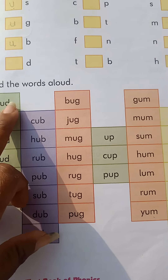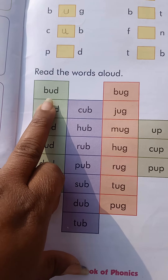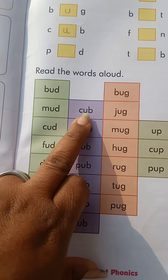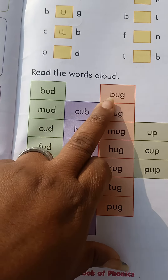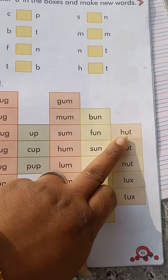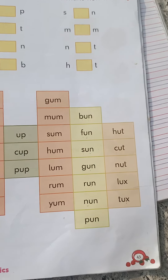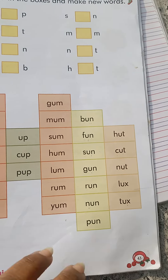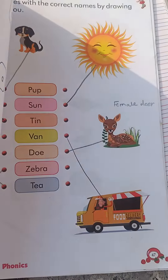Now read the words aloud: B-US, bird; C-UP, cup; B-UG, bug; up; G-UM, gum; B-URN, burn; H-UT, hut. So this one is a word.